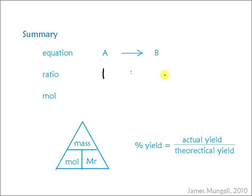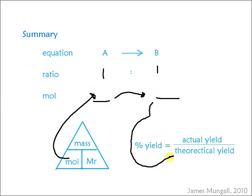To summarise: we had an equation with a one-to-one ratio of A to B, which meant the number of moles of A, if it was 100% yield, would equal the moles of B. We worked out the moles of A by taking its mass divided by its MR. Then once we had the moles of B, we converted that into a mass — our theoretical yield — by multiplying by its MR. Finally, to get the percentage yield, we took the actual amount of 2.1 grams divided by the theoretical yield of 2.95 grams.